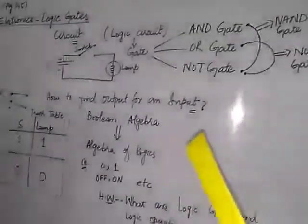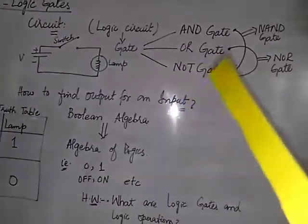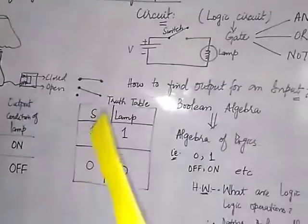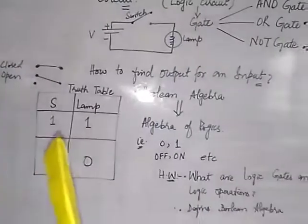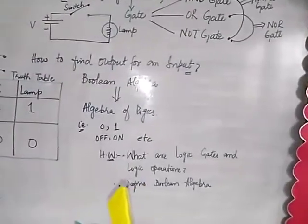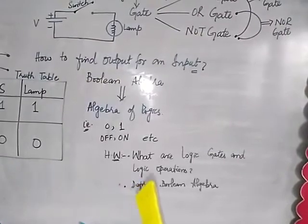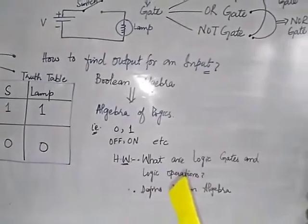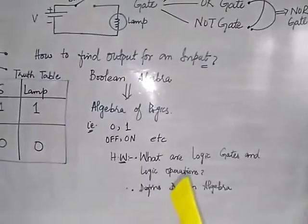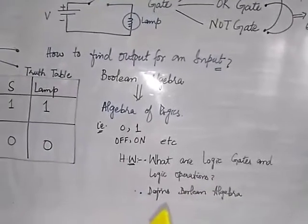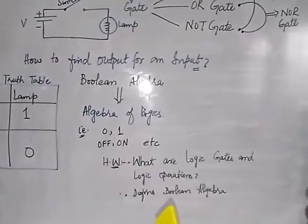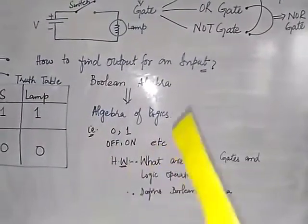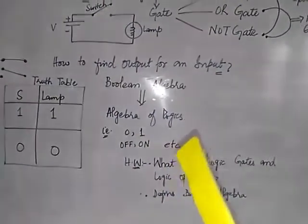You will further read about the gates and the circuits and the equations which give the answers about the output when you know the condition or the state of the input. Your today's homework is to write down the question: what are the logic gates and logic operations? You will find the answer from page 145 and 146. These are short questions. The other short question to attempt in your notebooks is: define Boolean algebra, and you will write down the definition of Boolean algebra or algebra of logic.